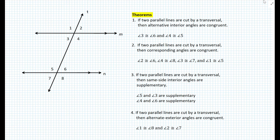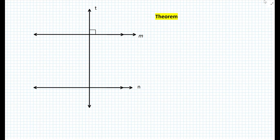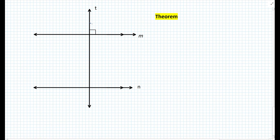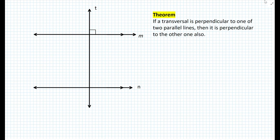So let's look at one more theorem pertaining to parallel lines, but in which the transversal is now perpendicular. Let's say we have two parallel lines and a transversal that is perpendicular to only one of the parallel lines. Then what can we say about the relationship between line T and line N? Well, it turns out that it also has to be perpendicular to line N. This can be argued because here we have corresponding angles — if two parallel lines are cut by a transversal, then corresponding angles are congruent. So if the top angle is a right angle, then this also must be a right angle. The theorem states: if a transversal is perpendicular to one of two parallel lines, then it is perpendicular to the other one also.